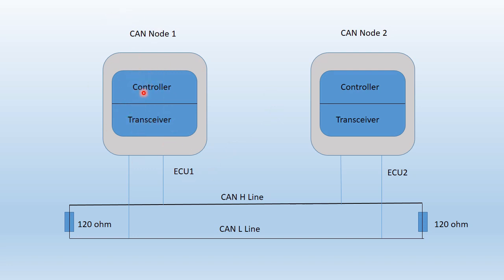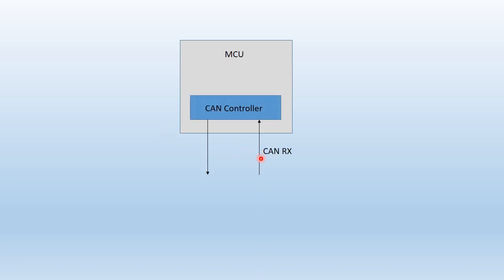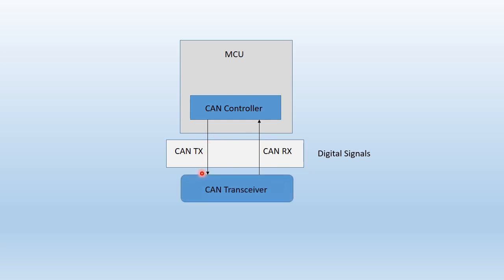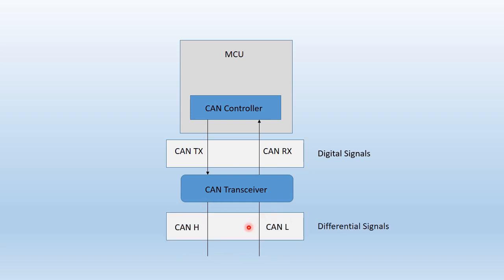So that's how a node looks: you have a microcontroller with a CAN peripheral, also called the CAN controller. The CAN controller gives you two pins — CAN TX and CAN RX — which are single-ended pins. These must be converted to differential signals using a CAN transceiver, which gives you two outputs: CAN H and CAN L. You connect those to the bus, and that's how a bus with multiple nodes works — communicating over CAN H and CAN L signals.